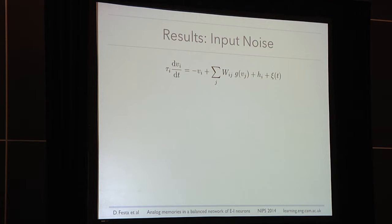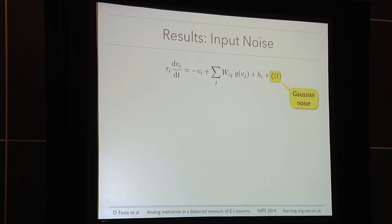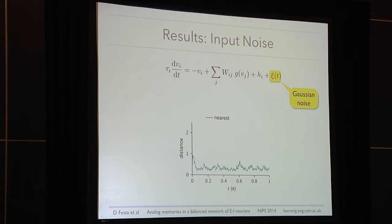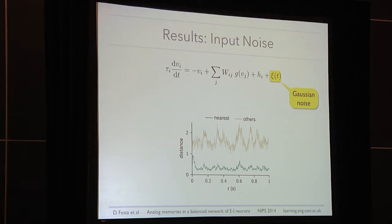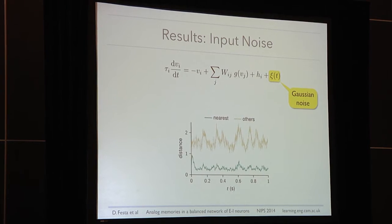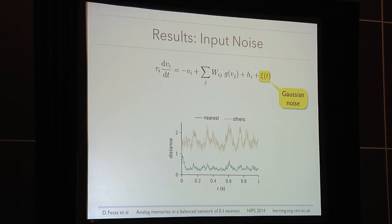Finally, we added a Gaussian noise term on the currents to the dynamics, so the system is constantly bombarded by noise. We measured what happens over time in terms of distance from the targeted memory. Starting close to one memory, we see large oscillations but the system remains close to the desired memory, while distances from all other memories remain much higher. This means that even when bombarded by noise, our system is capable of performing recall tasks.